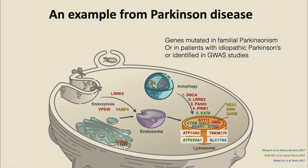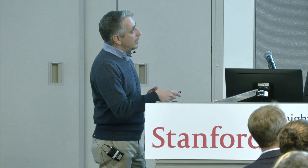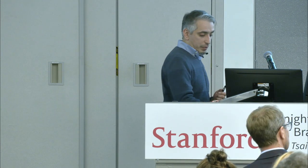To give a taste of what's going on in the literature, here is a genetic look at Parkinson's disease. If we look at all genes showing up in GWAS studies, exon sequencing of idiopathic patients, or familial forms of Parkinson's disease, many of them are localized to the lysosome. They encode lysosomal proteins or genes important for trafficking material to the lysosome, indicating how important maintaining the endocytic and lysosomal pathway is for brain homeostasis.